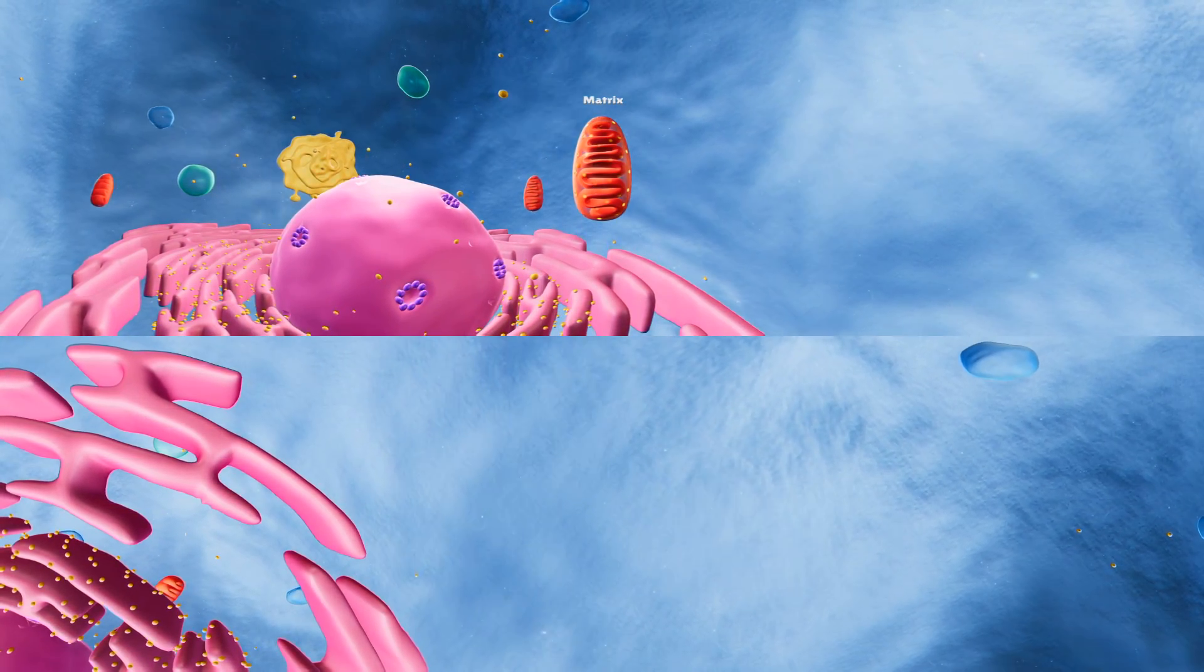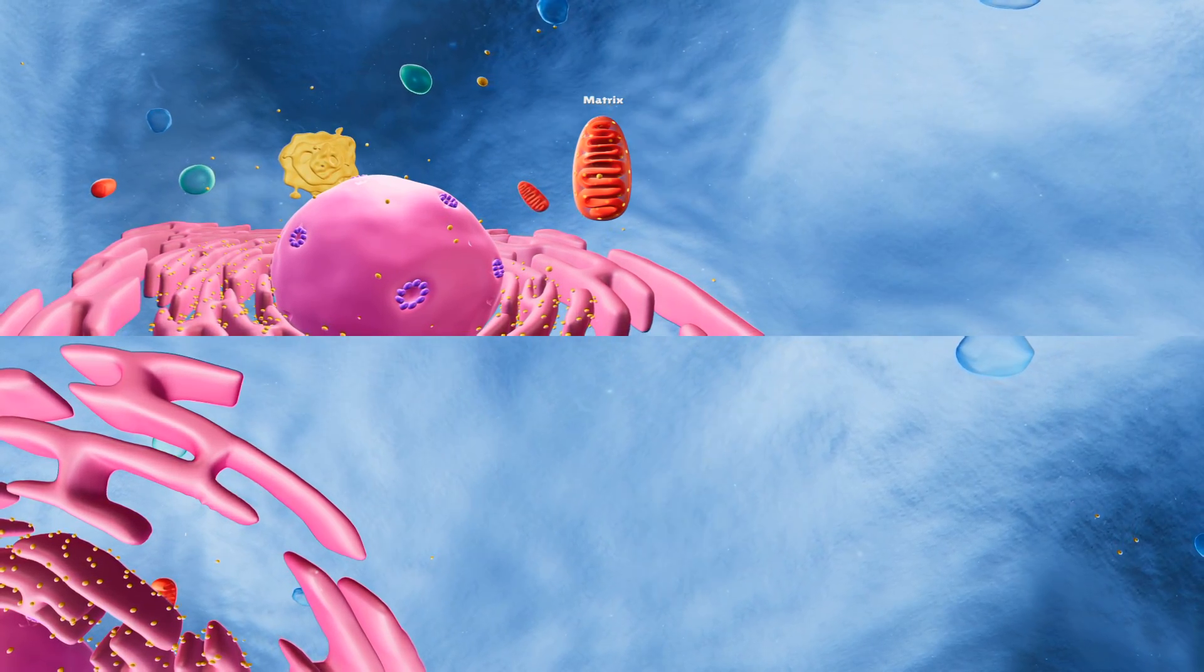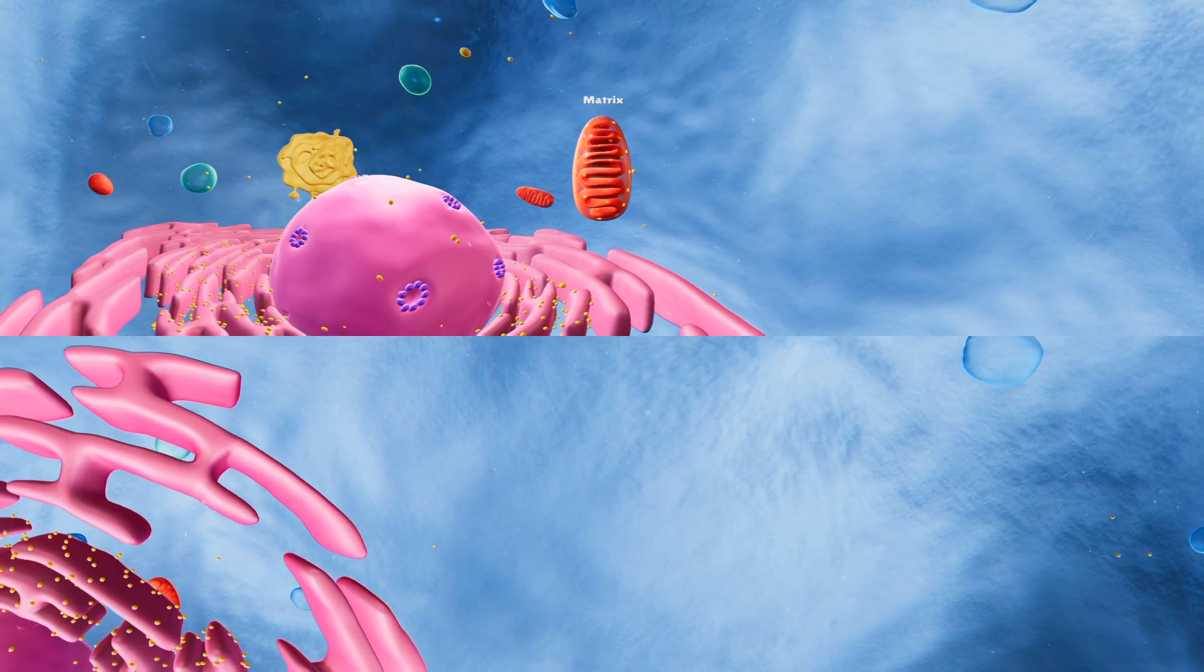The matrix is the space enclosed by the inner membrane. It contains many enzymes that also help with the generation of ATP.